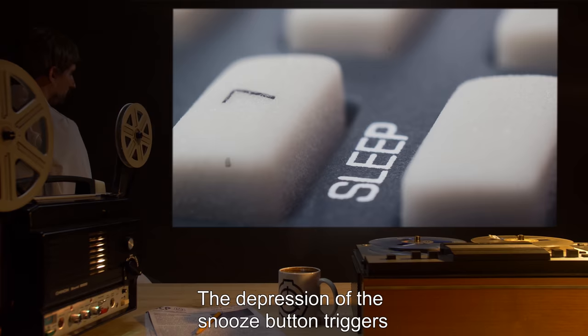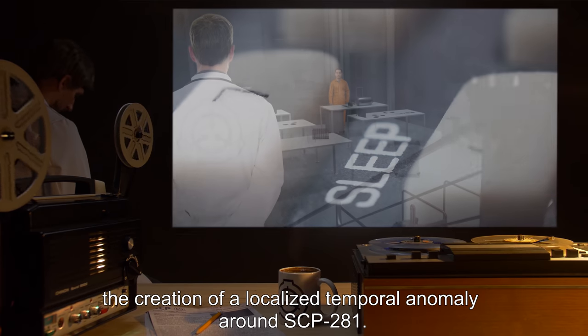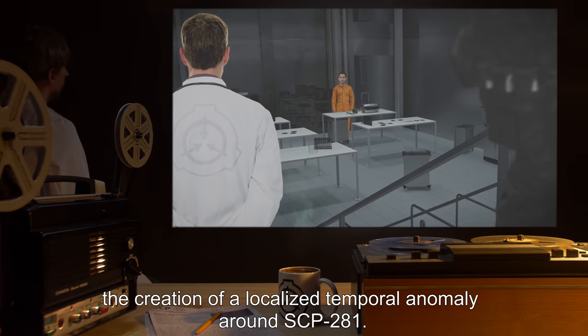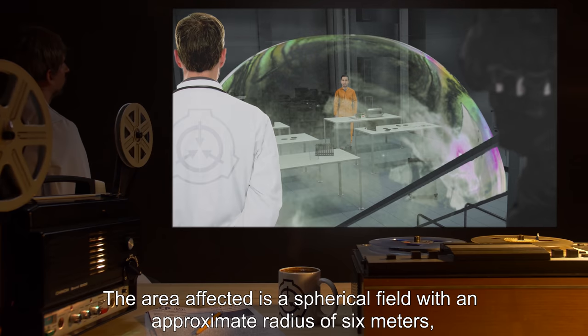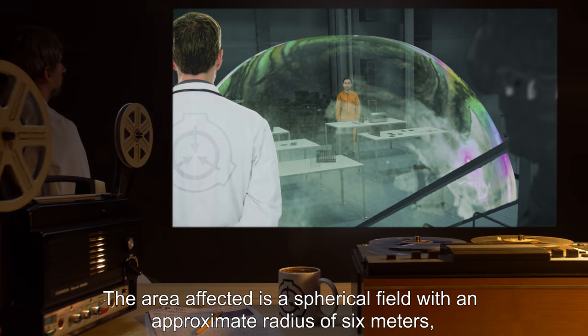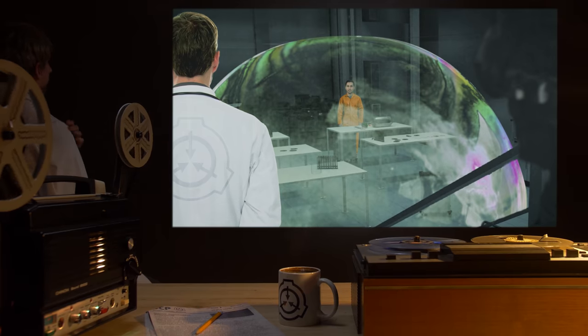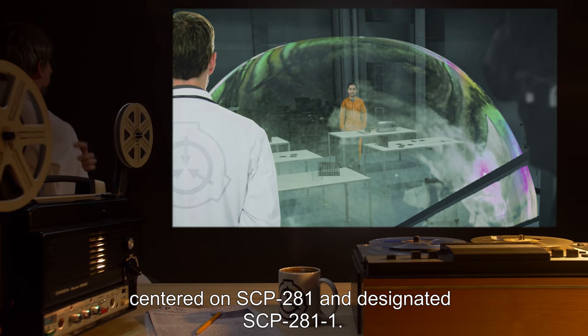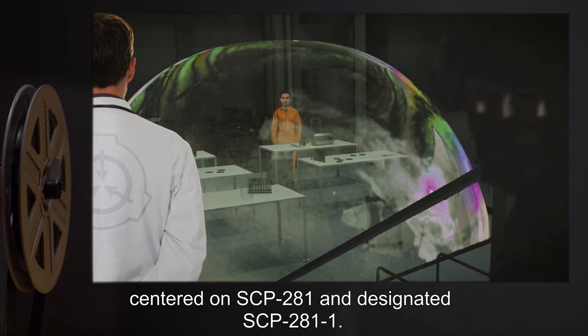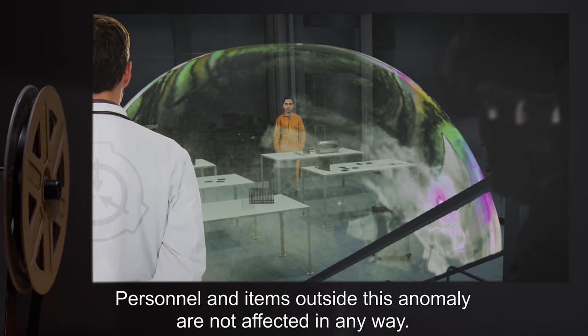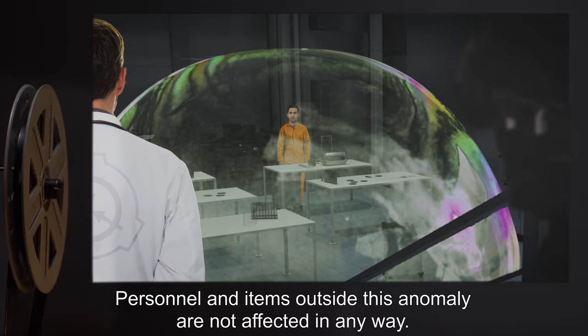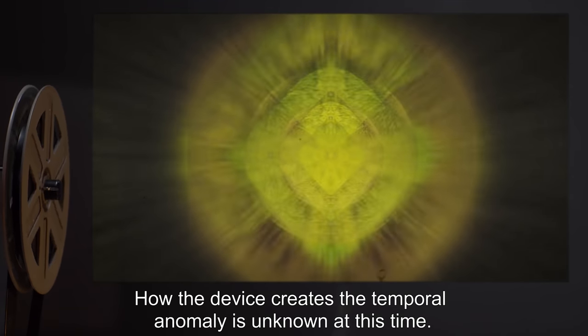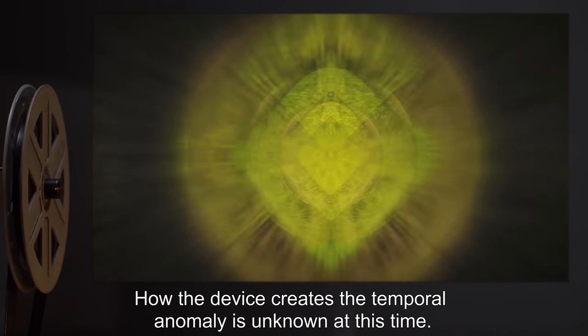The depression of the snooze button triggers the creation of a localized temporal anomaly around SCP-281. The area affected is a spherical field with an approximate radius of six meters centered on SCP-281 and designated SCP-281-1. Personnel and items outside this anomaly are not affected in any way.